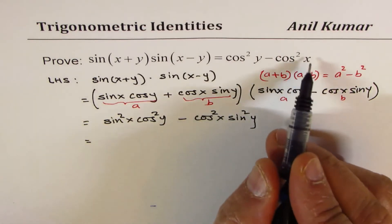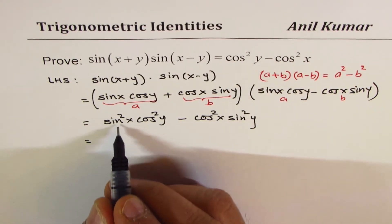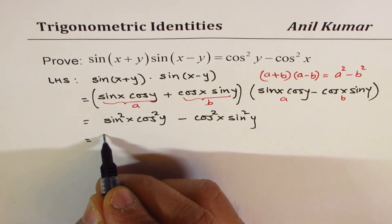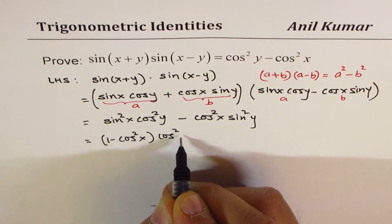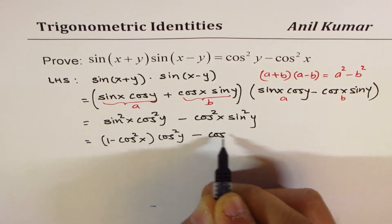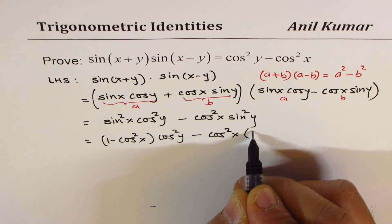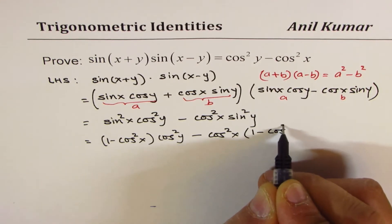Since we need everything in cos, let's write sine as 1 minus cos²x. So write this as (1 - cos²x) times cos²y minus cos²x times (1 - cos²y).